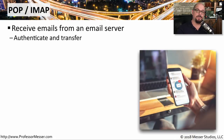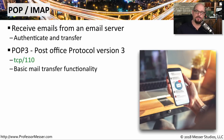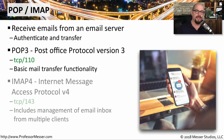We learned earlier that sending emails from your device uses SMTP, but receiving emails uses a completely different set of protocols. You may be using POP, or you may be using IMAP to authenticate and transfer email messages to your device. POP3 is Post Office Protocol version 3, and it uses TCP port 110 to perform that function. POP3 is considered basic mail transfer functionality. For most mobile devices today, we use IMAP4, or Internet Message Access Protocol version 4, which uses TCP port 143. This allows us to use multiple clients to access our inbox, so we can see exactly the same mailbox from our mobile device as we do from our desktop system.